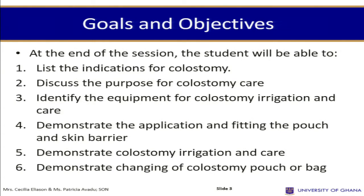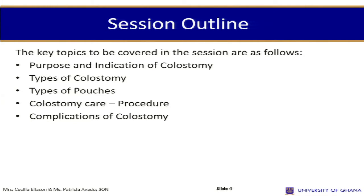Goals and objectives for this section. At the end of this session, students are required to list the indications for colostomy, discuss the purpose for colostomy care, identify the equipment for colostomy irrigation and care, demonstrate application and fixing of the pouch and skin barrier, demonstrate colostomy irrigation care, and demonstrate changing of the colostomy pouch or bag. The key topics to be covered are: purpose and indication of colostomy, types of colostomy, types of pouches, colostomy care procedure, and complications of colostomy.